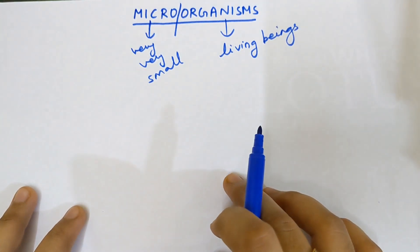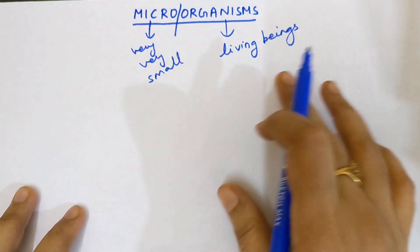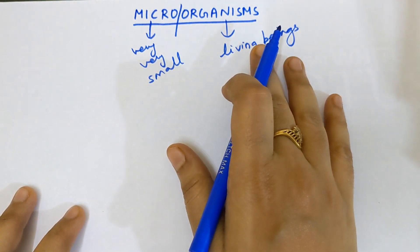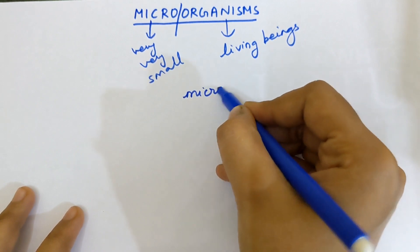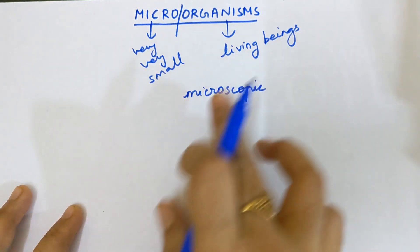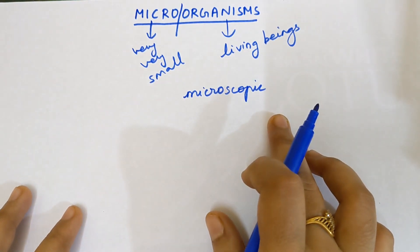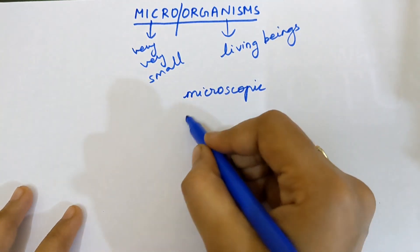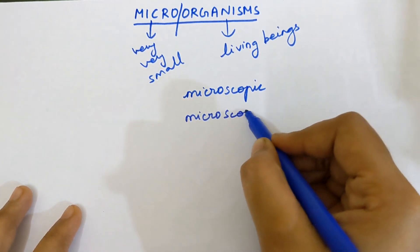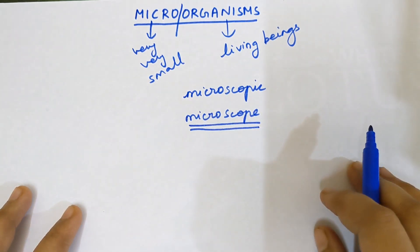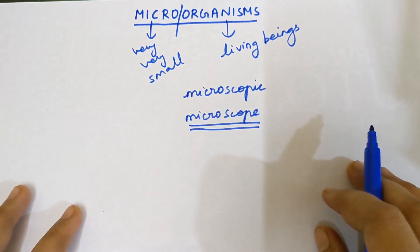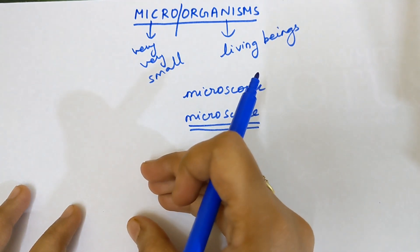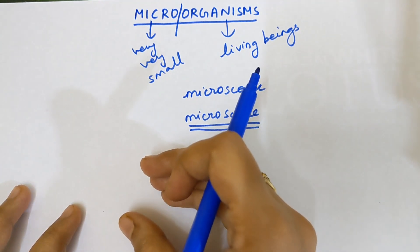So in this chapter, we are going to deal about extremely small living beings. Micro-organisms are microscopic — that means only with the help of a microscope, I will be able to see the micro-organisms. A microscope is an instrument which is going to show us any object in a very enlarged manner. If I keep a micro-organism under the microscope, I will be able to see it in a very enlarged way.